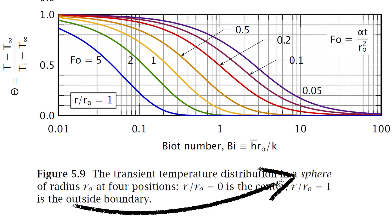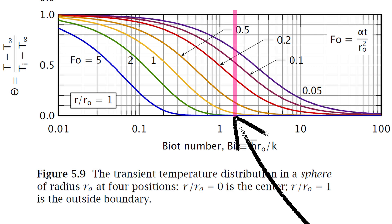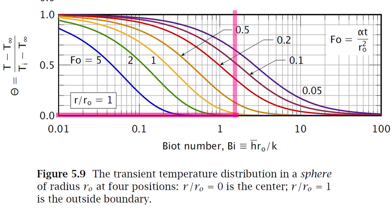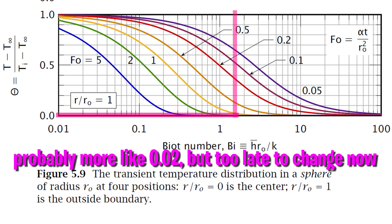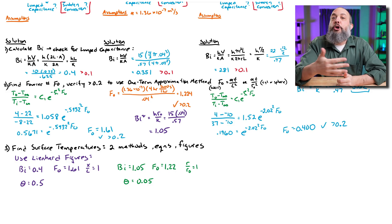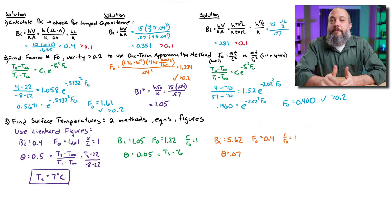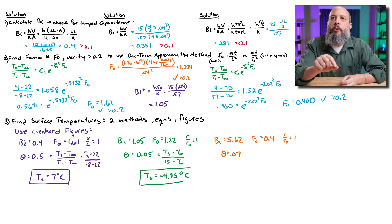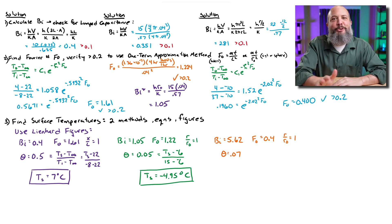For the sphere, at a Biot number of 1.05 on the horizontal axis and a Fourier number of 1.22, this falls between the yellow and green lines, a little closer to the yellow (Fourier number 1). Since I want the surface temperature, R over R-naught equals 1, so I use the bottom figure. Interpolating, I estimate theta ≈ 0.05, suggesting the surface is very close to the ambient air temperature. Plugging in gives a surface temperature of −4.95°C, quite close to the air temperature of −6°C.